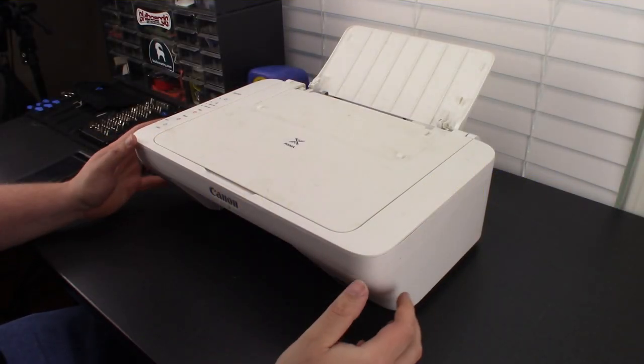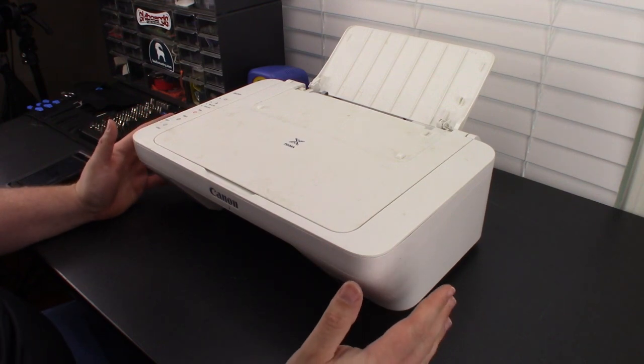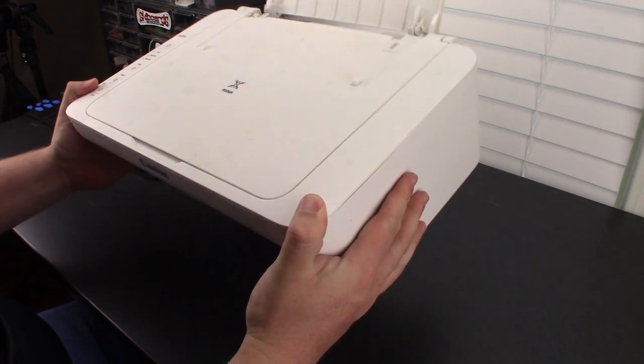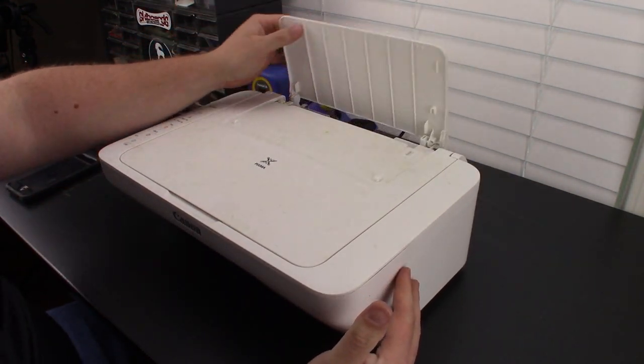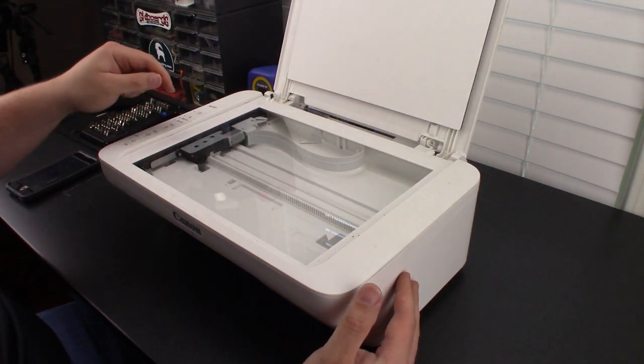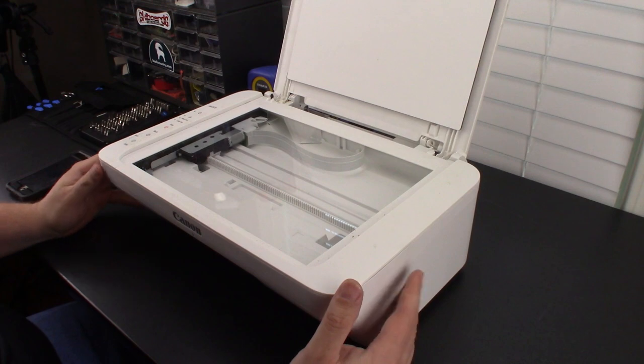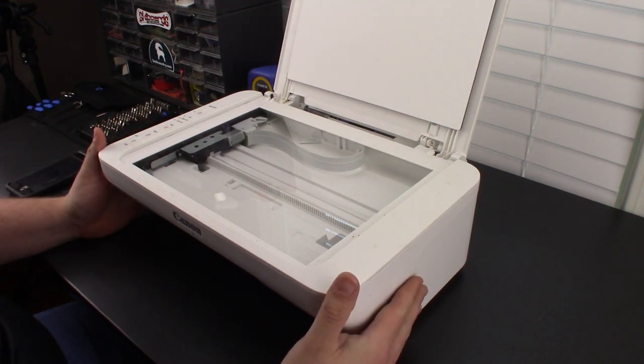So this is the victim. It's a Canon Pixma MG2520, a 30 buck printer and it feels like it. It's incredibly light, a lot of plastic. What I'm hoping to scavenge out of it is the motor here, maybe the ribbon cable, this whole bar assembly, and I'm hoping there might be a stepping motor or something on the inside.